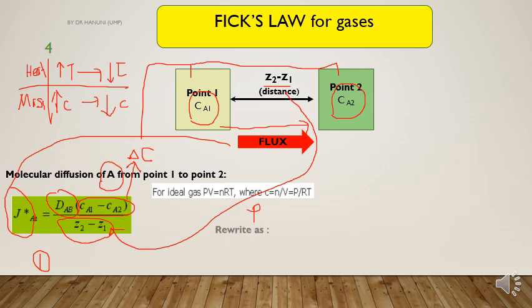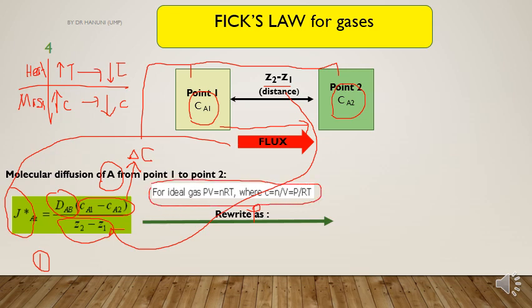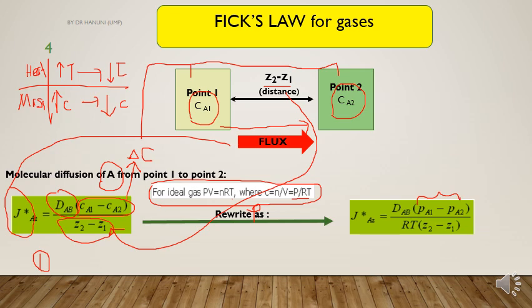We can also rewrite the equation in terms of pressure. We use the ideal gas equation, PV = nRT, where R is the gas constant and T is the temperature. C here can be converted into a P term by dividing by R and T. So the equation can be rewritten using the pressure difference delta P.